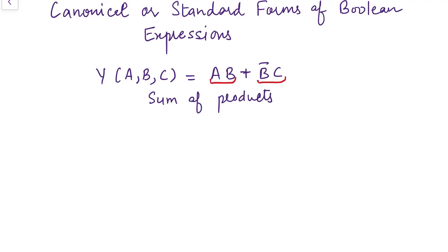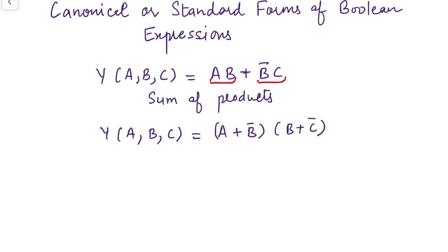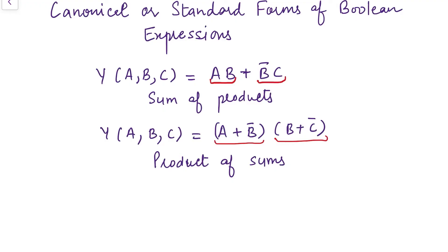The second form for Boolean expressions: another function y which has three variables, we can write it as (a plus b-complement) into (b plus c-complement). This type of expression is known as product of sums. The first term is a sum term, the second term is also a sum term, and then they are multiplied together. That's why we call it product of sums.